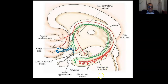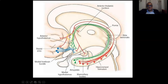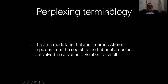Here you can see the stria terminalis in green, extending from the amygdala in the roof of the temporal horn and on the surface of the thalamus, reaching the septal area and hypothalamus. And here is the lamina terminalis, extending from the rostrum of the corpus callosum to the upper part of the chiasm — the posterior surface of the chiasm — and it is traversed by the anterior commissure.